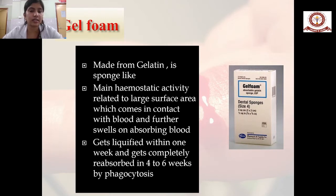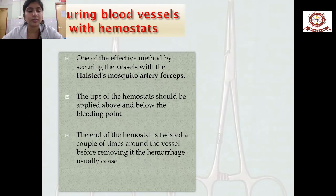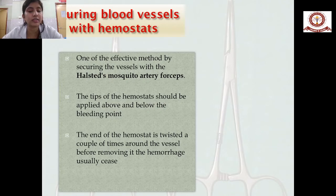Gel foam is made from gelatin as a sponge-like material. Its main hemostatic activity is related to its large surface area which comes in contact with blood and swells on absorbing blood. It liquefies within one week and is completely reabsorbed in four to six weeks by phagocytosis. For securing blood vessels, hemostats like the Halstead mosquito artery forceps are used as one of the most effective methods.